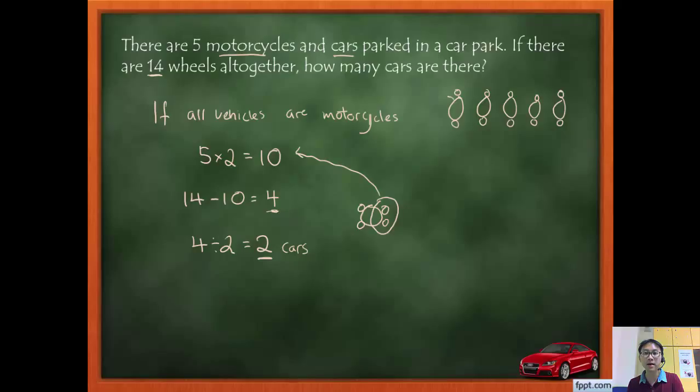So which means, if I add the wheels here, sorry my car looks a bit ugly now. So let's check. If I add them all up together, four plus four, eight, eight plus two, ten, ten plus two, twelve, twelve plus two, another fourteen. So I am correct, I have fourteen wheels. So that means I have two cars and three motorcycles. So this is the make a supposition method.